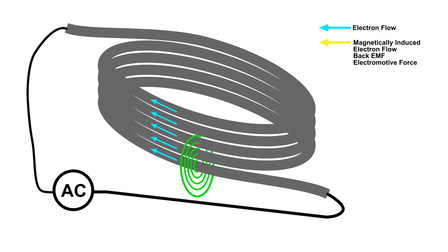But it's the same wire, and of course that's going to be everywhere on the wire. And what that does is, the expanding magnetic field is going to produce a current. And look at the direction — it is in the opposite direction.